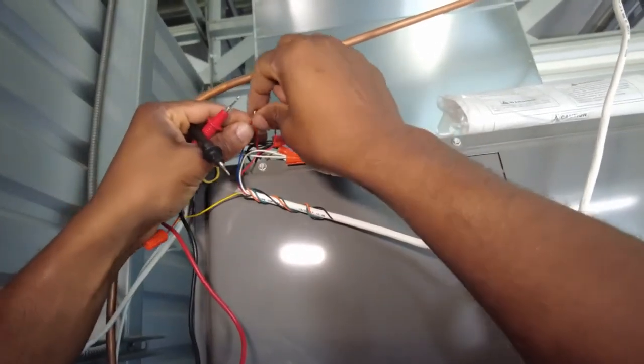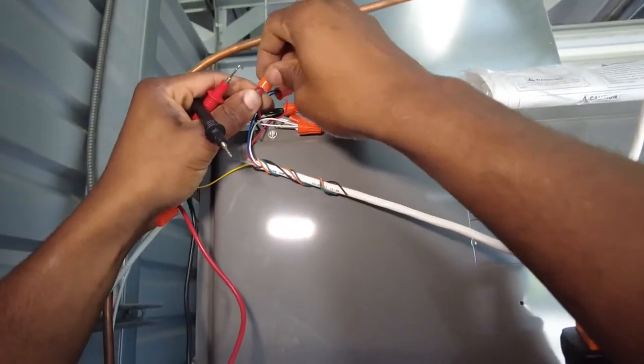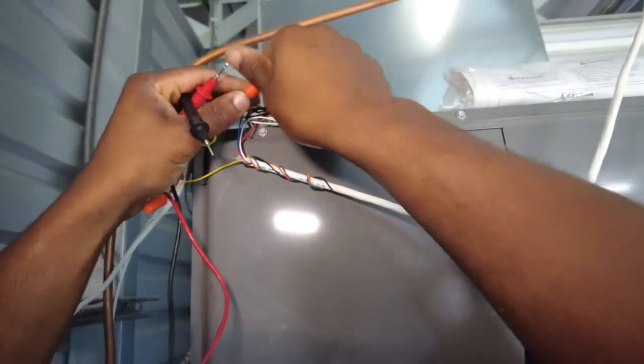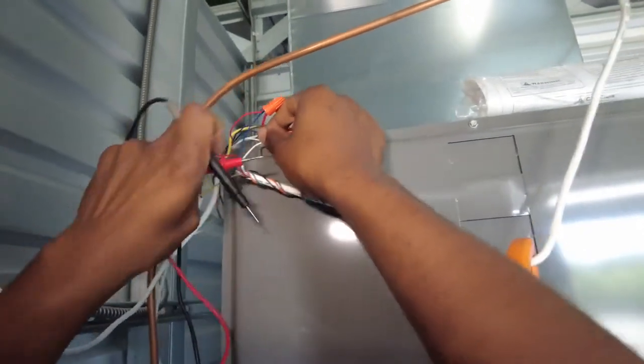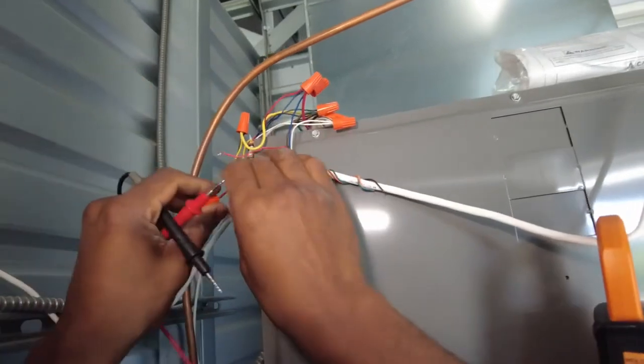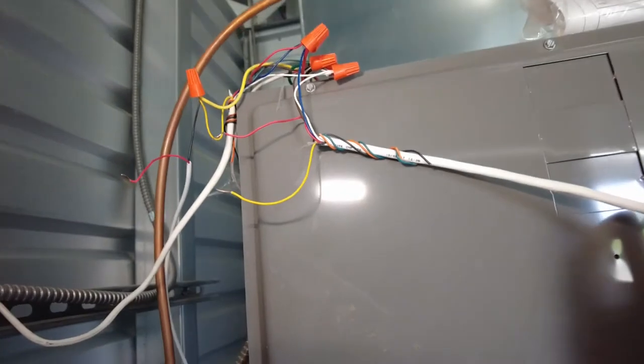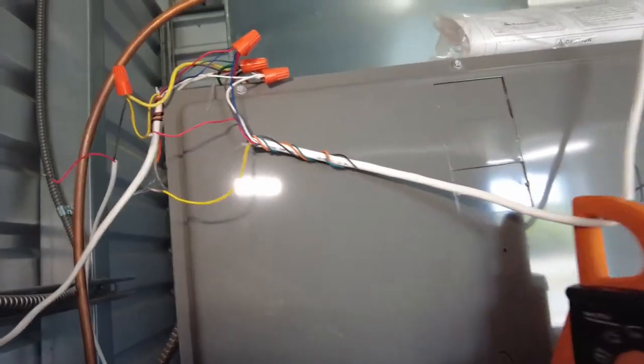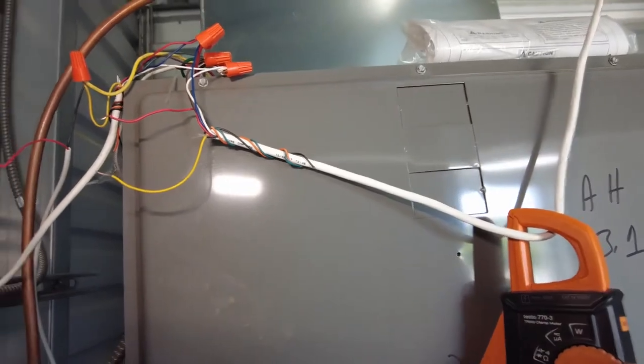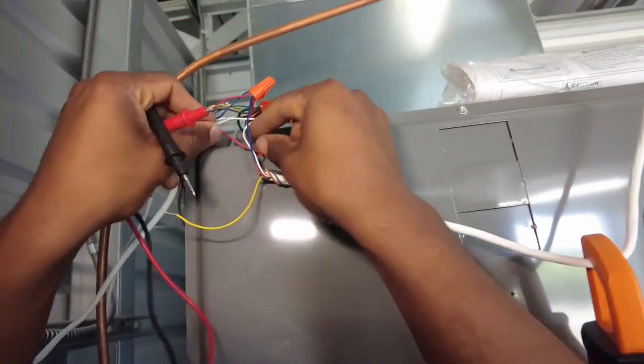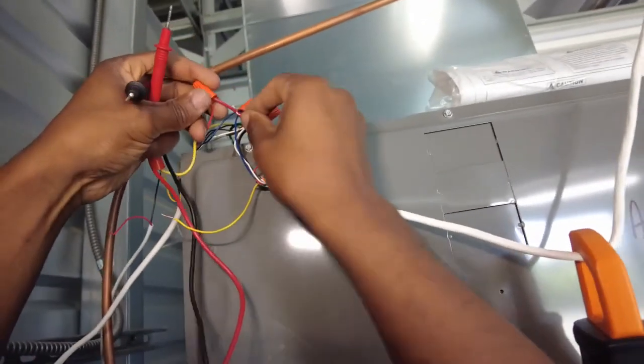Okay, let me just check the outdoor unit. See if that contactor is acting up. Check the resistance here. I'm going to contactor. Oh, wait. It's a heat pump, so I'd have to go out there and check it.